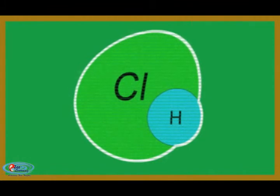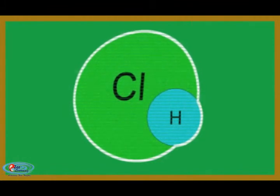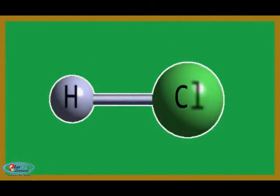Hydrogen chloride is a diatomic molecule. It is a compound of the elements hydrogen and chlorine. It is in the form of a gas at room temperature and pressure.